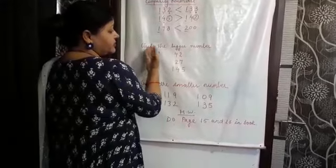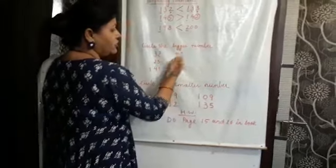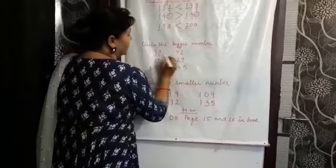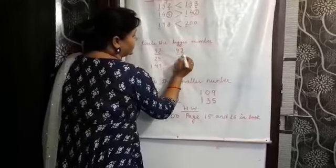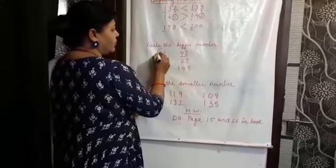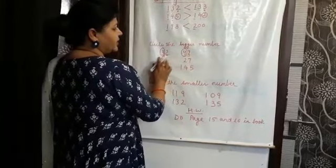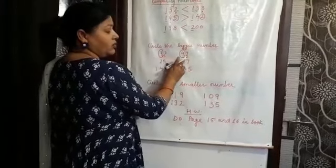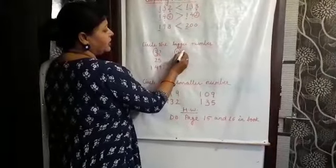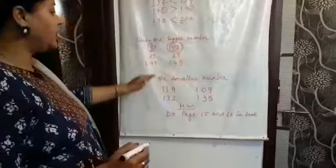Now see more examples. Circle the bigger number. Here it is 32 and here it is 42. You will compare from the tens place. Which is bigger, 3 or 4? 4 is bigger. So you will circle this number.